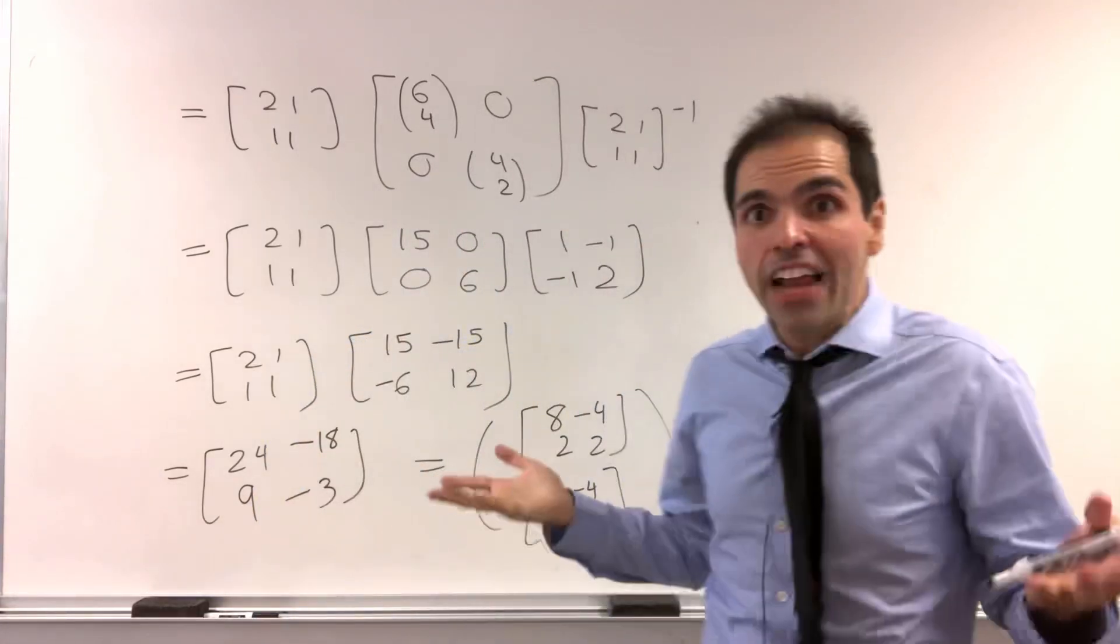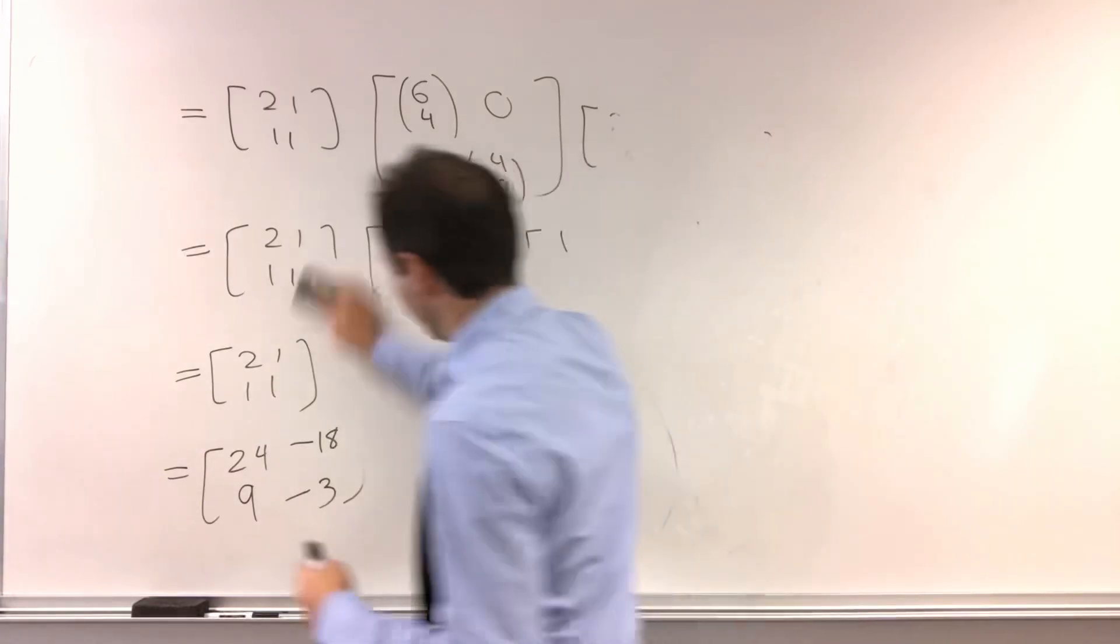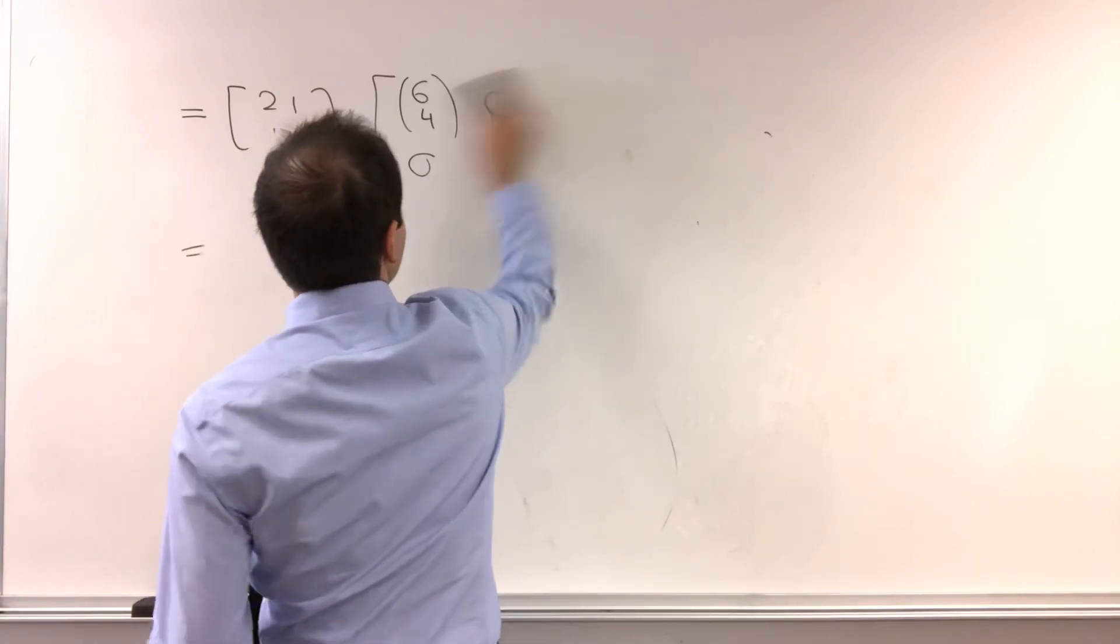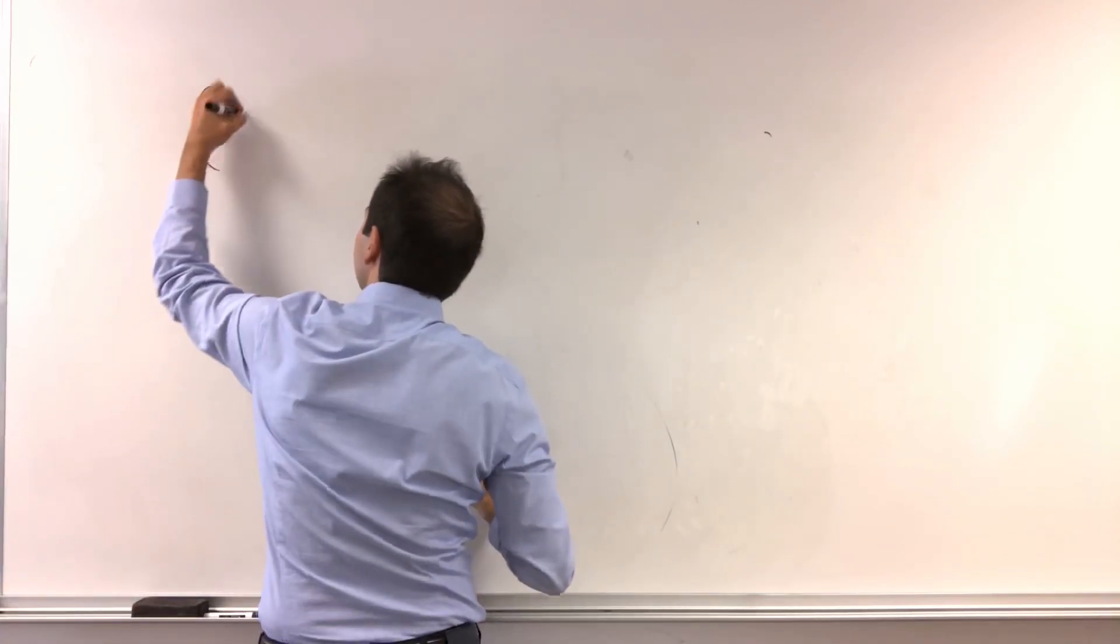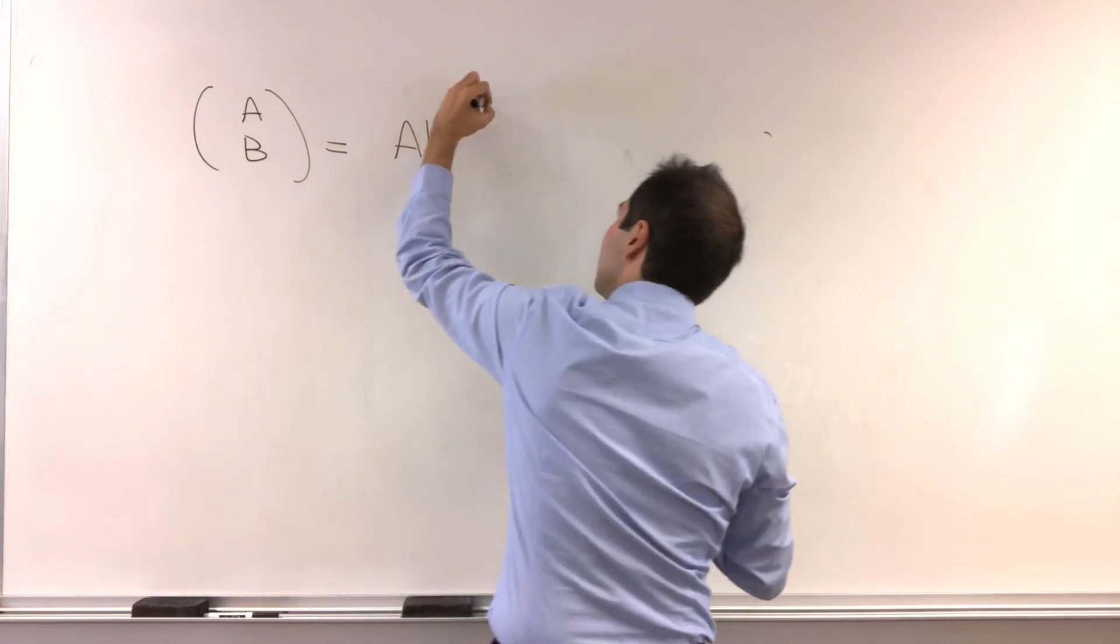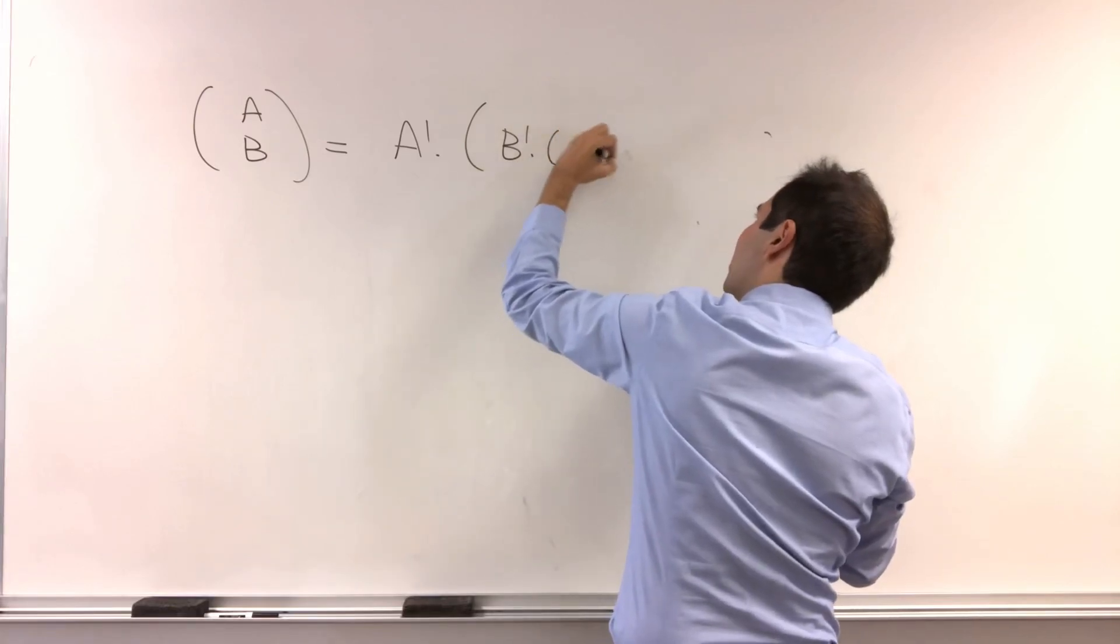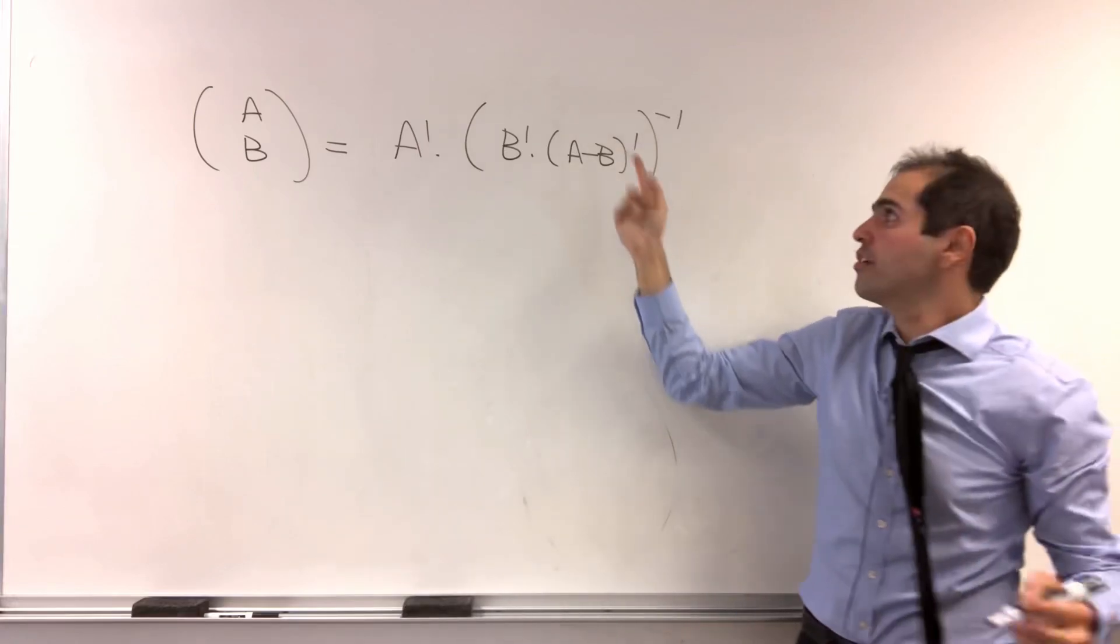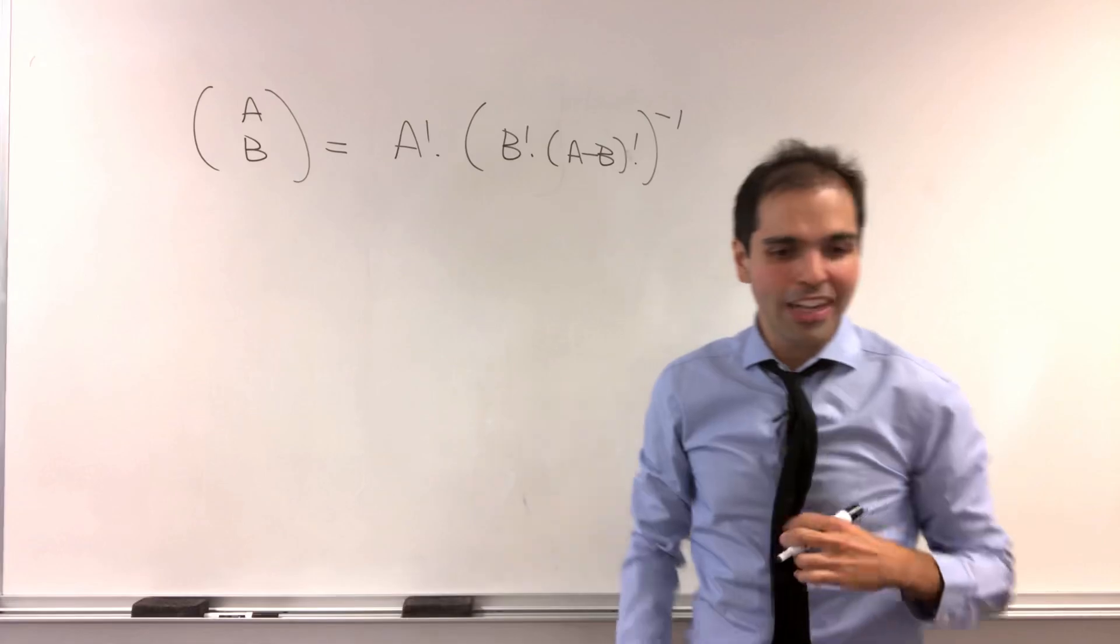But more generally, how would you define, you know, a choose b? Well, it's still the same definition. But, well, you have to replace stuff. So remember, a choose b. We define it to be a factorial times, again, b factorial times, a minus b factorial inverse. I think in general, the order does matter if you take the right inverse or the left inverse. Someone can correct me on this.